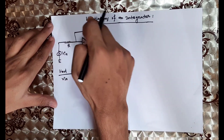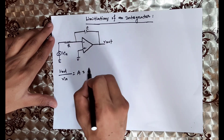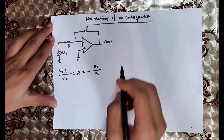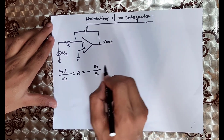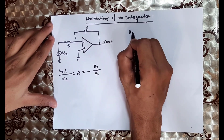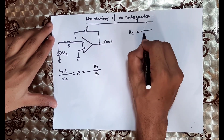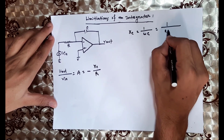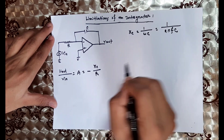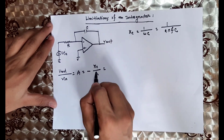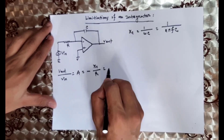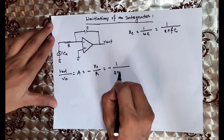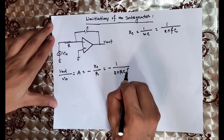If you replace Rf with the capacitor, the impedance Xc is 1 divided by omega C. Omega is 2 pi f, so Xc equals 1 divided by 2 pi f times C. Therefore, the gain becomes minus 1 divided by 2 pi R C f.